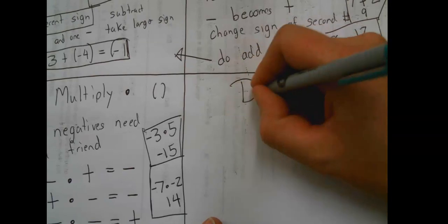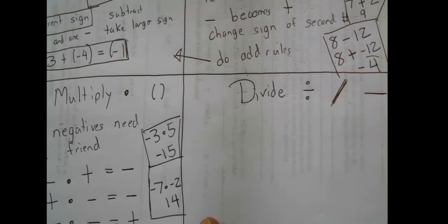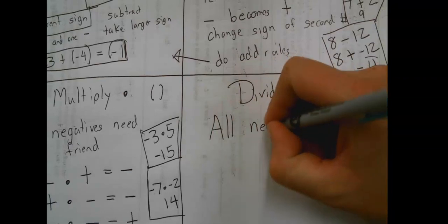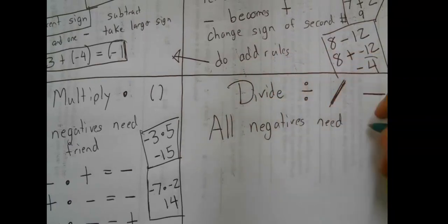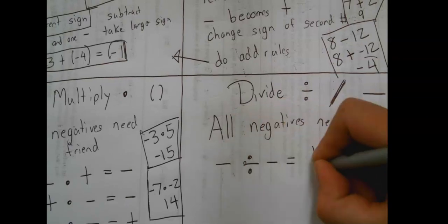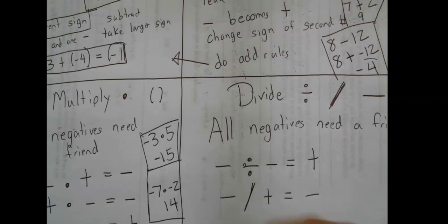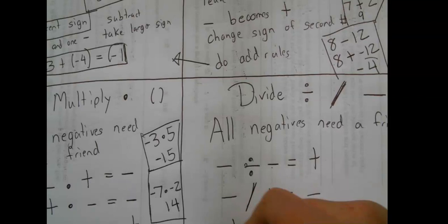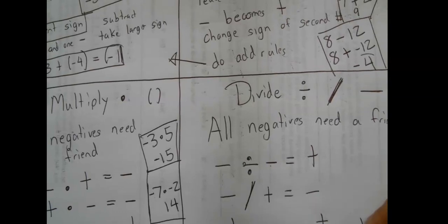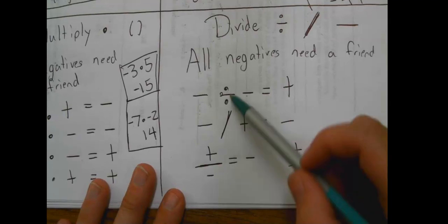On the divide side, symbols that mean divide. You could have the divide division symbol like this. A slanty line or a horizontal line can all mean divide. For divide, it's the same rules as negative. All negatives need friends. Which means a negative divided by a negative is a positive, because these two are friends. But a negative divided by a positive is a negative, because this negative needs a friend. And a positive divided by a negative equals a negative. And a positive divided by a positive is a positive. You'll notice I used all of the different division symbols there.